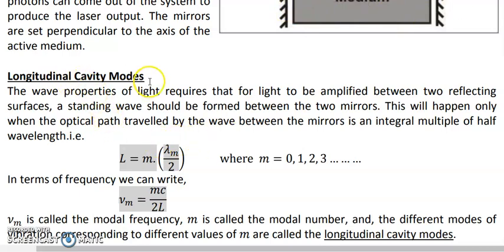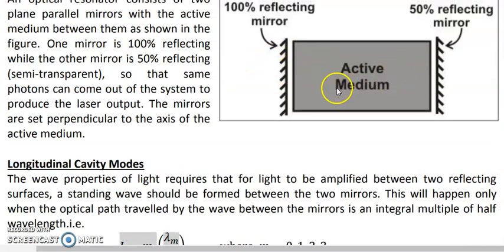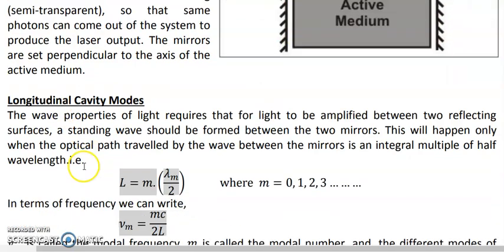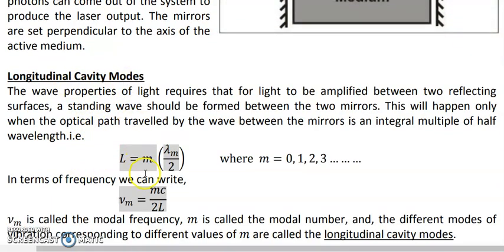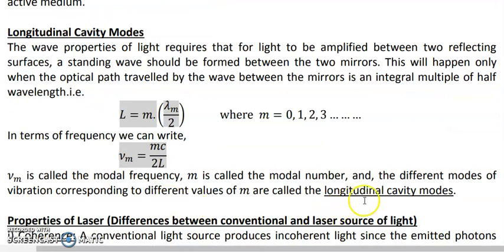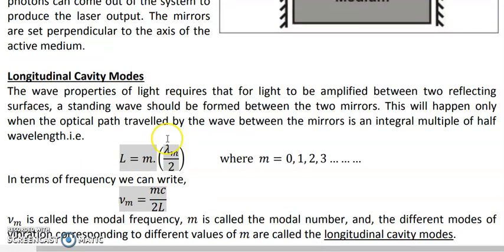These are called longitudinal cavity modes because the gap between the two mirrors acts like a cavity. Whatever light waves are vibrating between the two mirrors are called cavity modes. For m = 1 we have the primary mode, m = 2 gives the secondary mode with two loops, m = 3 gives the tertiary mode with three loops, and so on for different values of m.